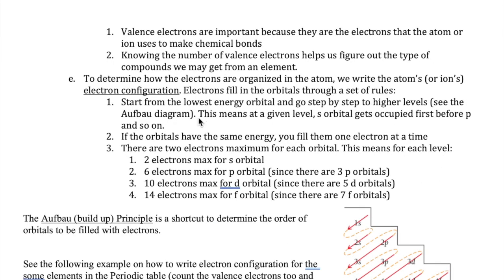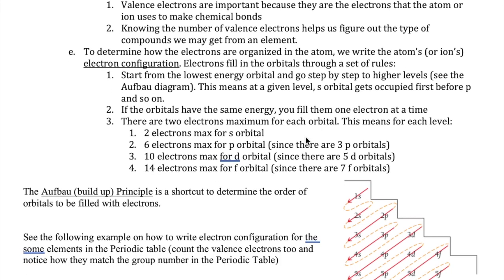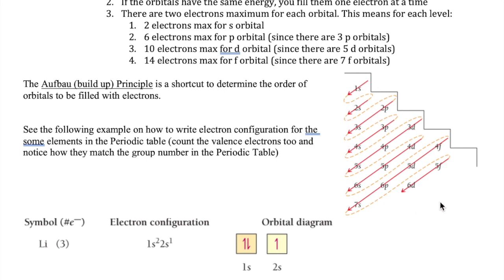You start by putting electrons from the lowest energy orbital — in this case, the 1s orbital. This idea is called the Aufbau principle. Aufbau is a German word meaning the rule to build up the atom. A diagram showing how to fill electrons into your atom is called the Aufbau diagram.